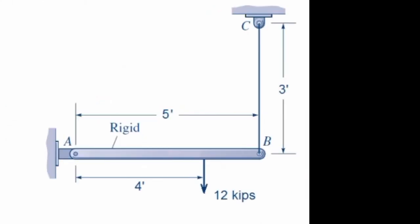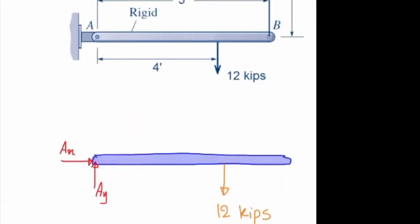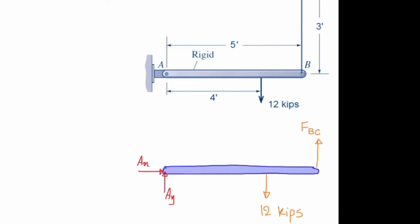There is one unknown force at B which comes from that rod. When I cut that, when I make that free, I need to put an unknown force there. So let me call that force as FBC.